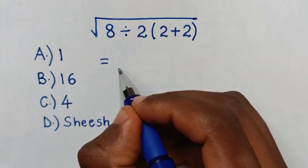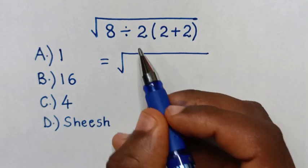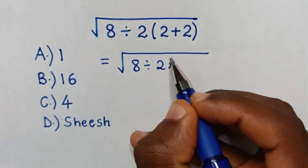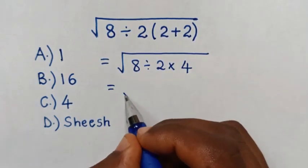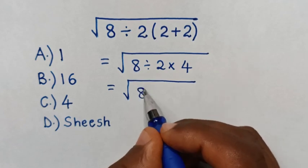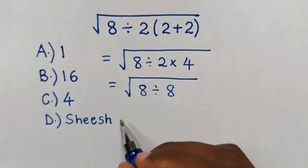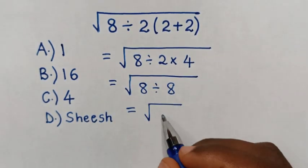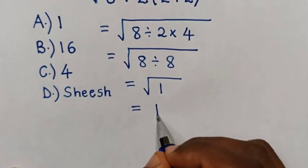So, it will be equal to square root of 8 divided by 2, then times 2 plus 2 is 4. Then it will be equal to square root of 8, then divided by 2 times 4 is 8. Then it will be equal to square root of 8 divided by 8 is 1. So, it will be equal to square root of 1, which is 1.